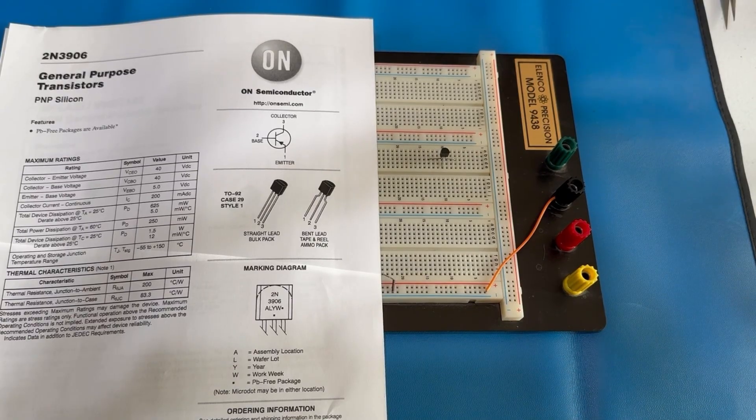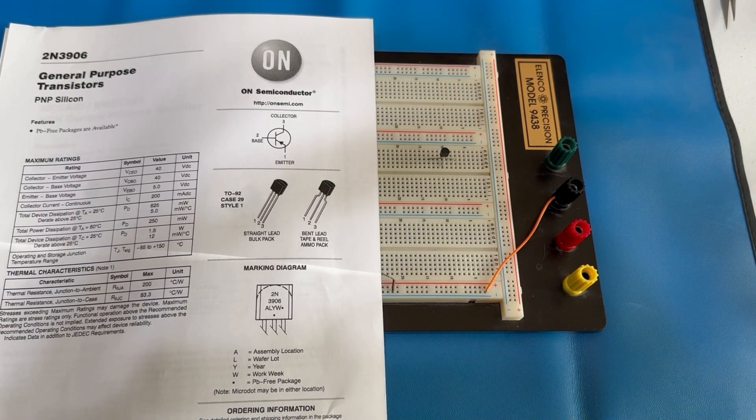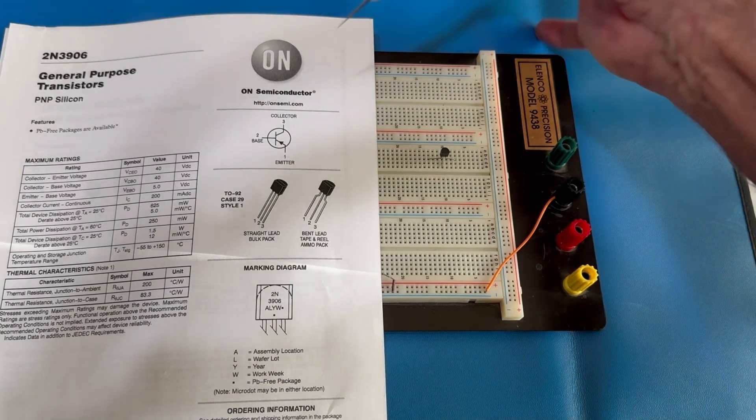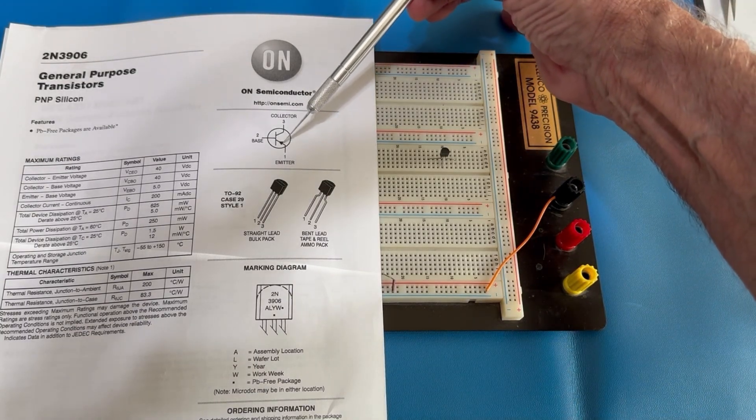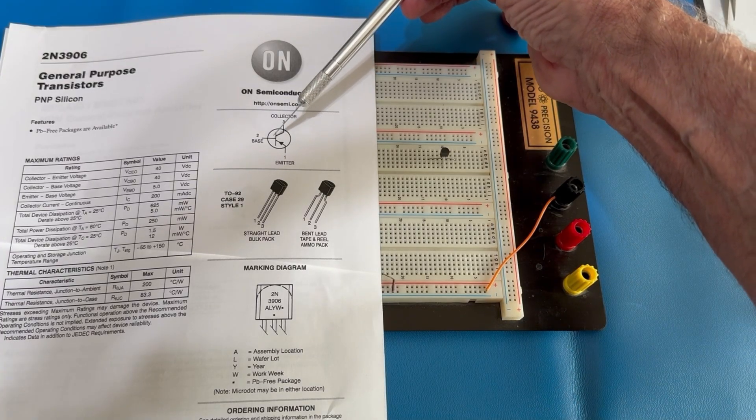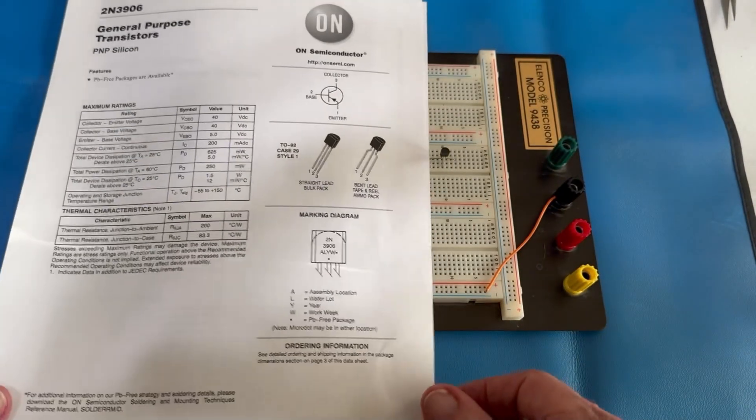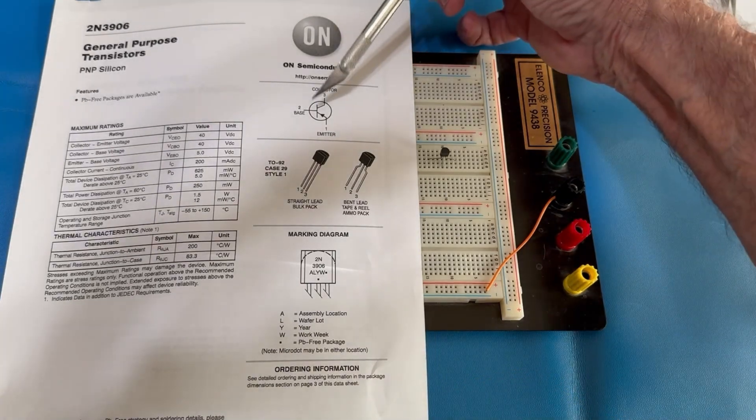Okay, we're going to do the 2N3906 general-purpose PNP silicon transistor. As in the symbol, you can notice there's a little bit of difference. The PNP symbol on the emitter, the arrow points into the base. Whereas on an NPN transistor, the arrow would point away from the base, going the opposite direction.